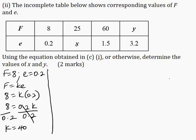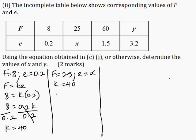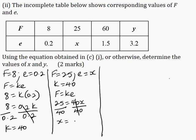Next, calculate the value of X. When F is equal to 25, E is equal to X, and K is equal to 40. From C part 1, F is equal to KE. Substituting: 25 is equal to 40 multiplied by X. Dividing both sides by 40, X is equal to 0.625.